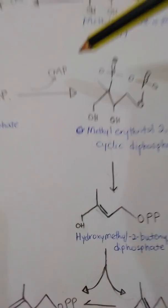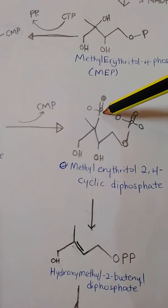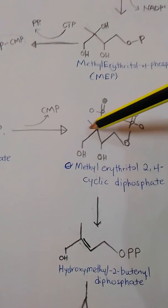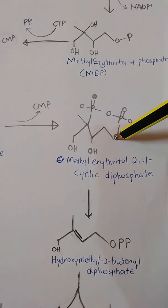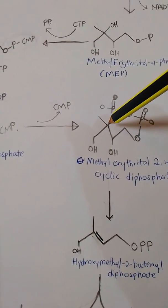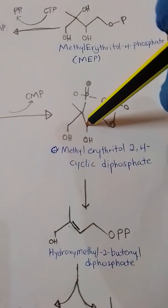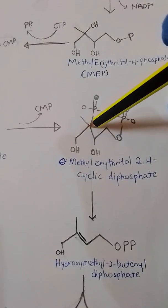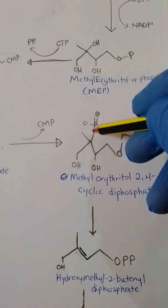The next reaction is that the phosphate on the second carbon is transferred to the terminal phosphate to form a pyrophosphate or diphosphate at the end. When that happens, a vacancy is created on that carbon, and since these reactions are enzyme-catalyzed, there is a dehydration reaction so that a double bond is initiated between those carbons.